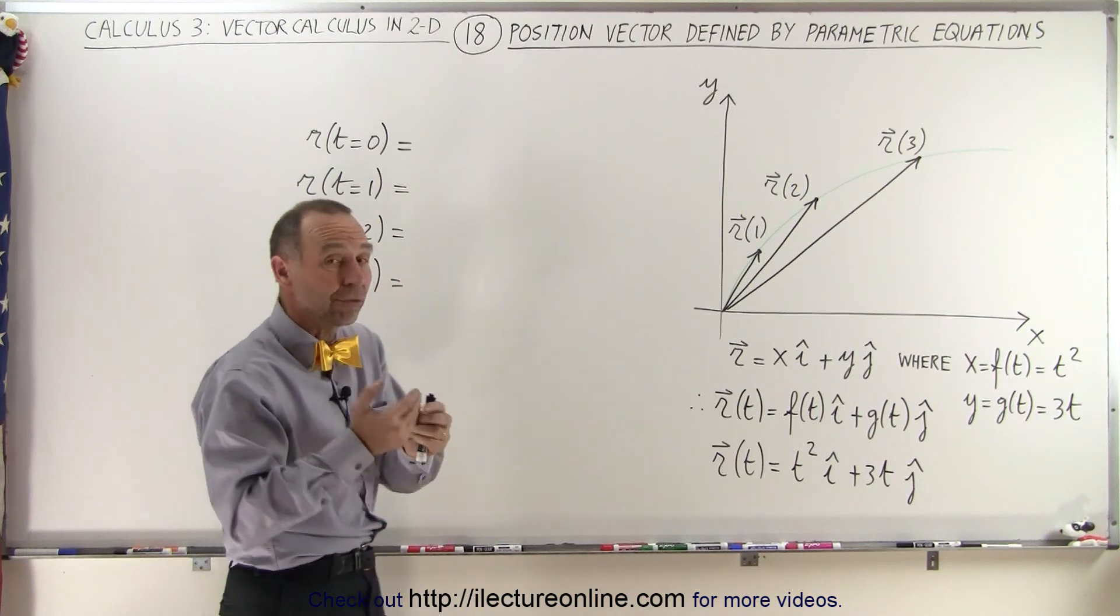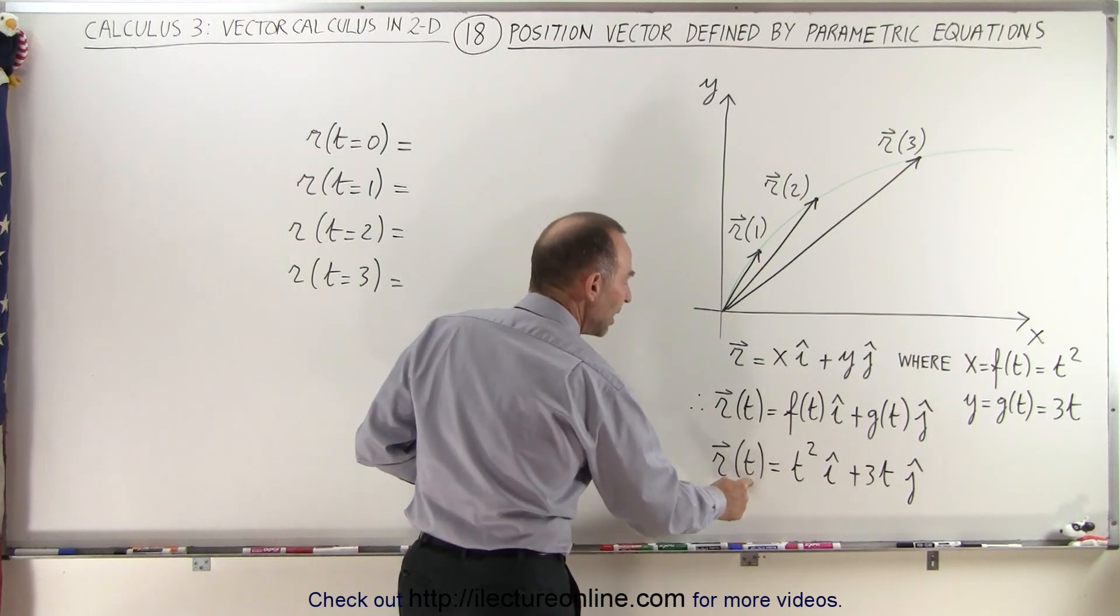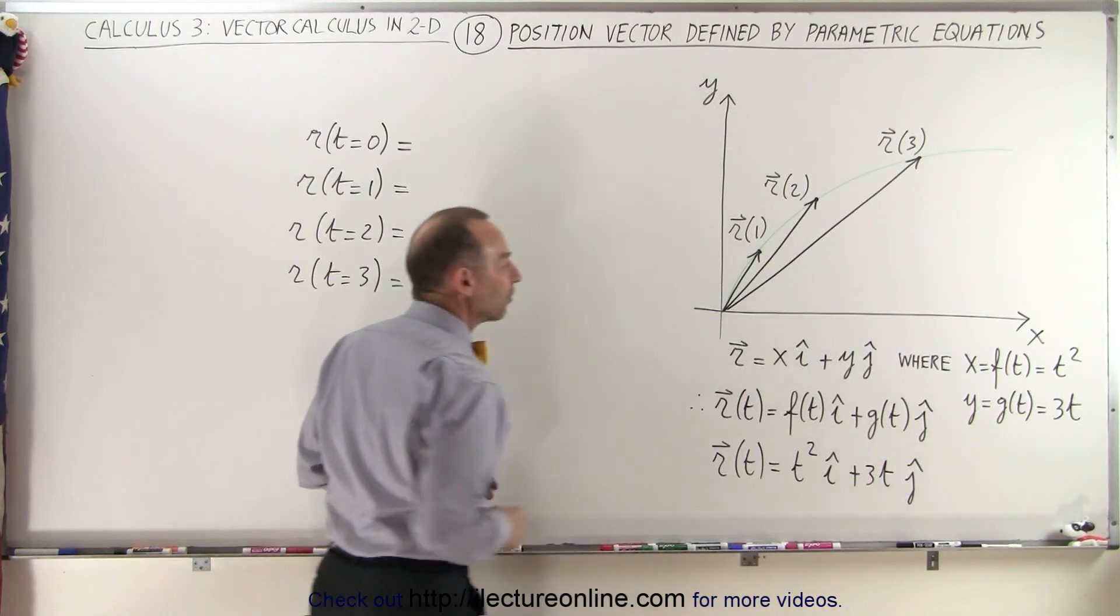Now all we have to do is to figure out where that particle is. We just plug in different values for t, and we'll get different values for this expression.